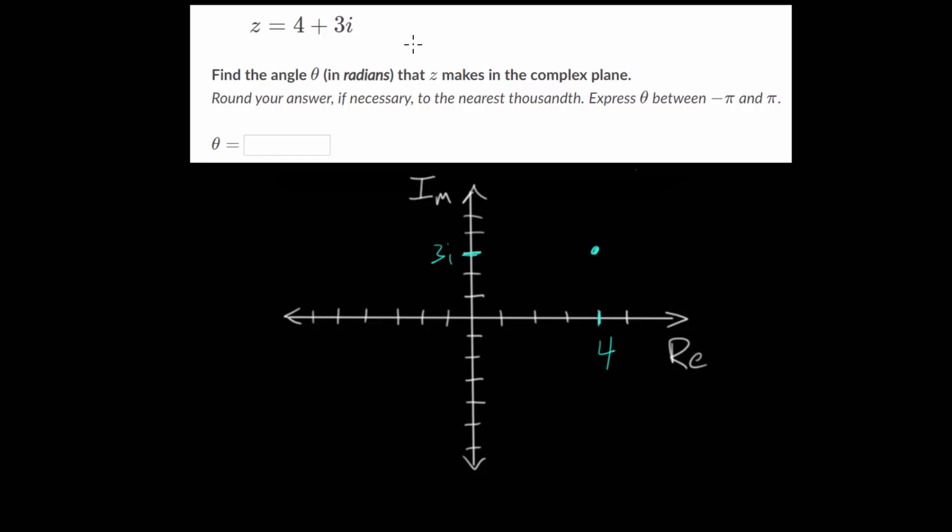And if we want, we can represent this number z as a vector. So let's draw a line or an arrow from the origin to this complex number z, this point right here.